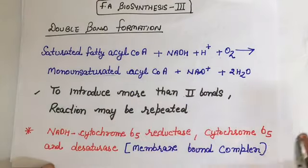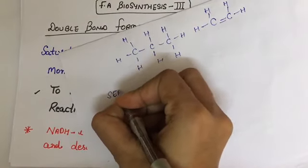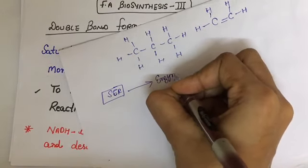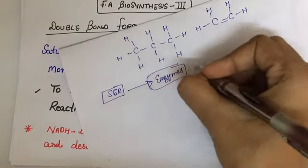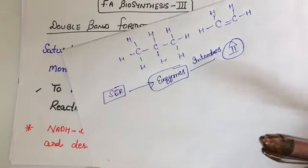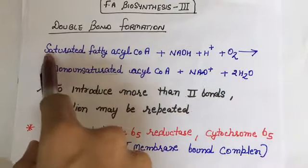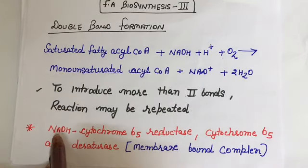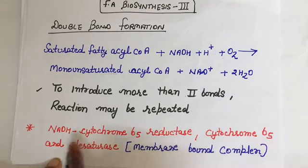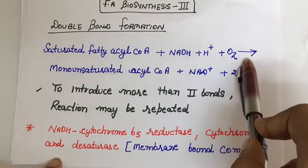Okay, so in eukaryotes, smooth endoplasmic reticulum has enzymes which have the ability to introduce double bonds into fatty acyl coenzyme A. This reaction is catalyzed by three enzymes: NADH cytochrome b5 reductase, cytochrome b5, and desaturase. These enzymes are in the form of a membrane bound complex.